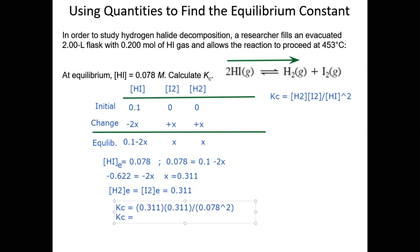Now we have all equilibrium concentrations: [HI] = 0.078 M, [H2] = [I2] = 0.011 M. We calculate K = [H2][I2]/[HI]² = (0.011)(0.011)/(0.078)² ≈ 0.020. Actually the result works out to approximately 0.020. Let me verify — the K comes out to about 0.020 for this expression.